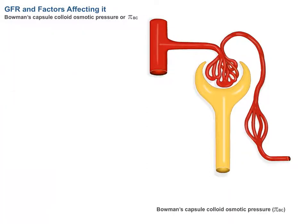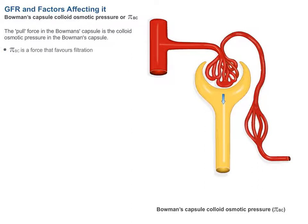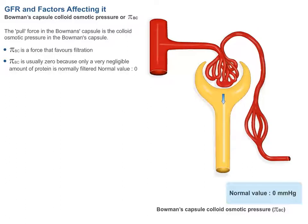Bowman's capsule colloid osmotic pressure, or PI-BC, is the pull force in the Bowman's capsule and is a force that favors filtration. PI-BC is usually zero because only a very negligible amount of protein is normally filtered. Normal value is zero.